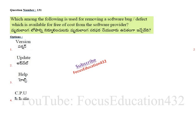The options are: version, update, help, or CPU. The correct answer is 'update.' For example, if you purchase Microsoft Windows software and there are any defects — known as a bug — they will keep giving you updates, and these updates help in removing those bugs. Note: the answer key given by the technical board said CPU, but CPU is the wrong answer because CPU is not software; it is hardware.